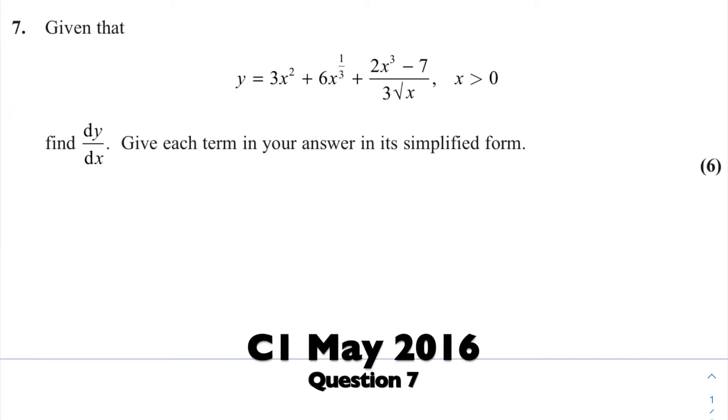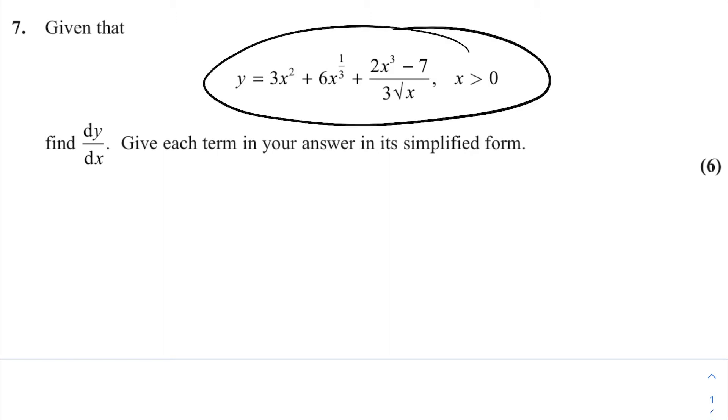We're given a polynomial y equals 3x squared plus 6x to the third and there's a fraction there that I'm going to deal with first, but we're asked to find dy by dx and give each term in your answer in a simplified form.